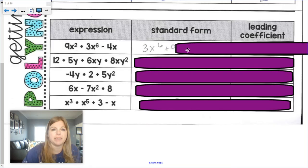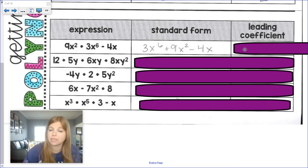Next would be 9x squared. Last would be negative 4x. Once it's in standard form, we can see our leading coefficient. It's the number in front. It's 3.